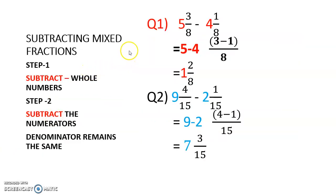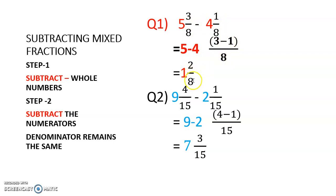Now let us see an example with mixed fractions. For subtraction, we subtract the whole number separately and the fractional part separately. So 5 and 3 upon 8 minus 4 and 1 upon 8: 5 minus 4 gives us 1, and 3 minus 1 upon 8 is 2 upon 8. So the answer is 1 and 2 upon 8.